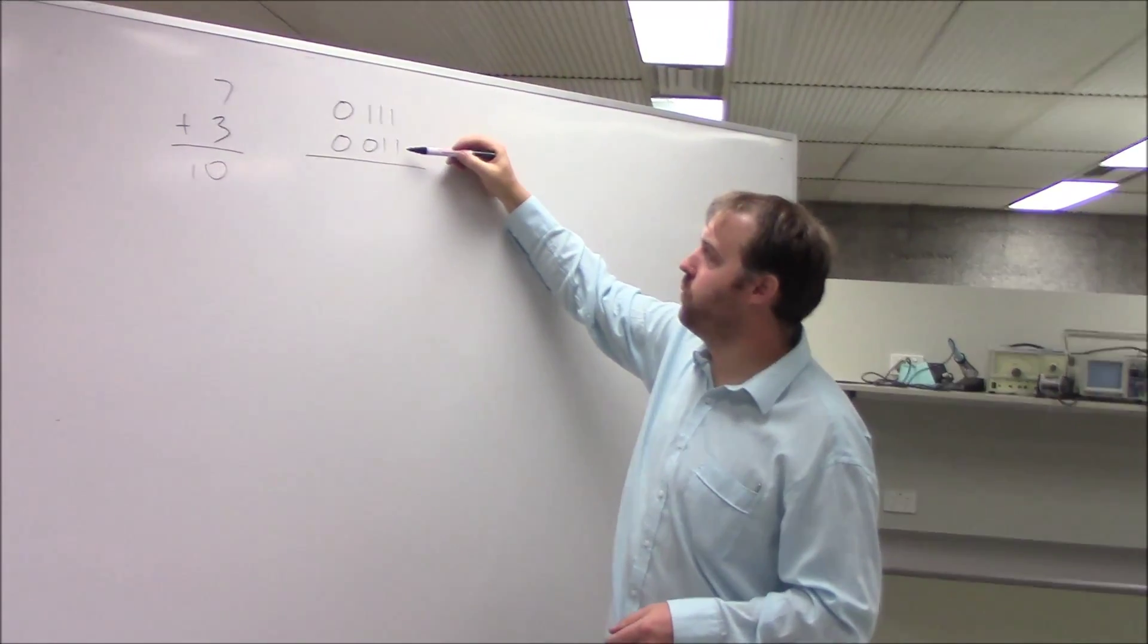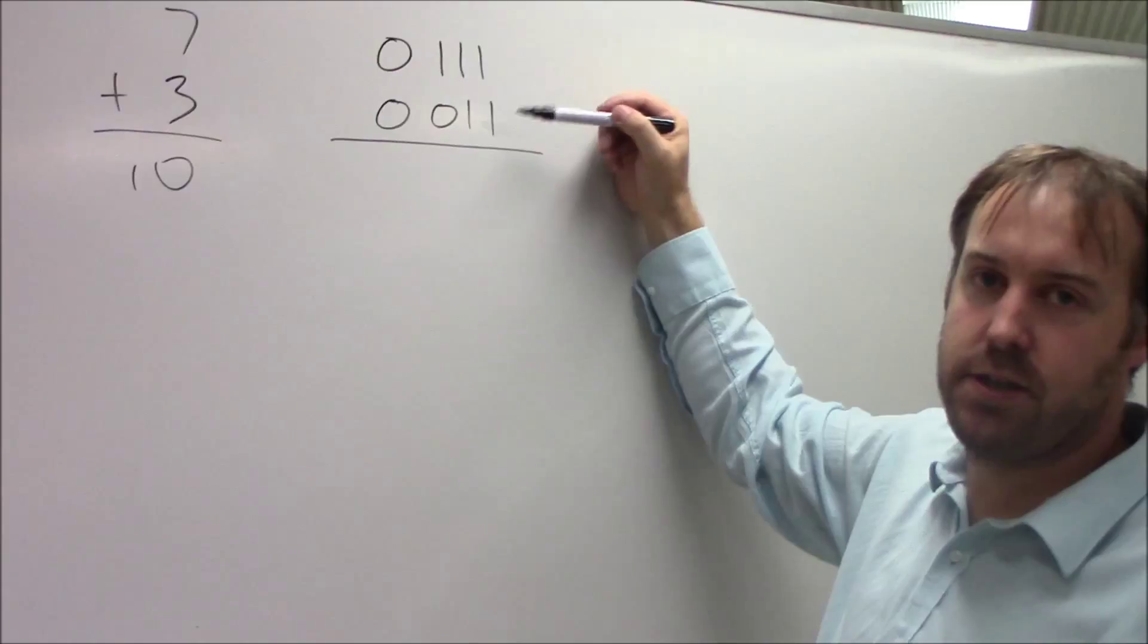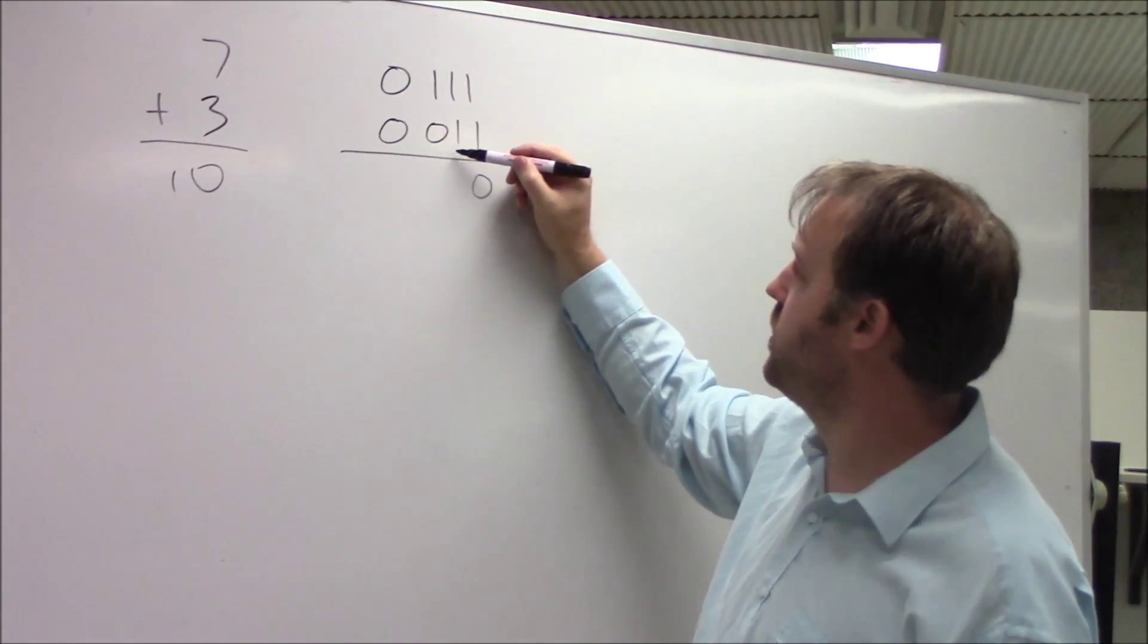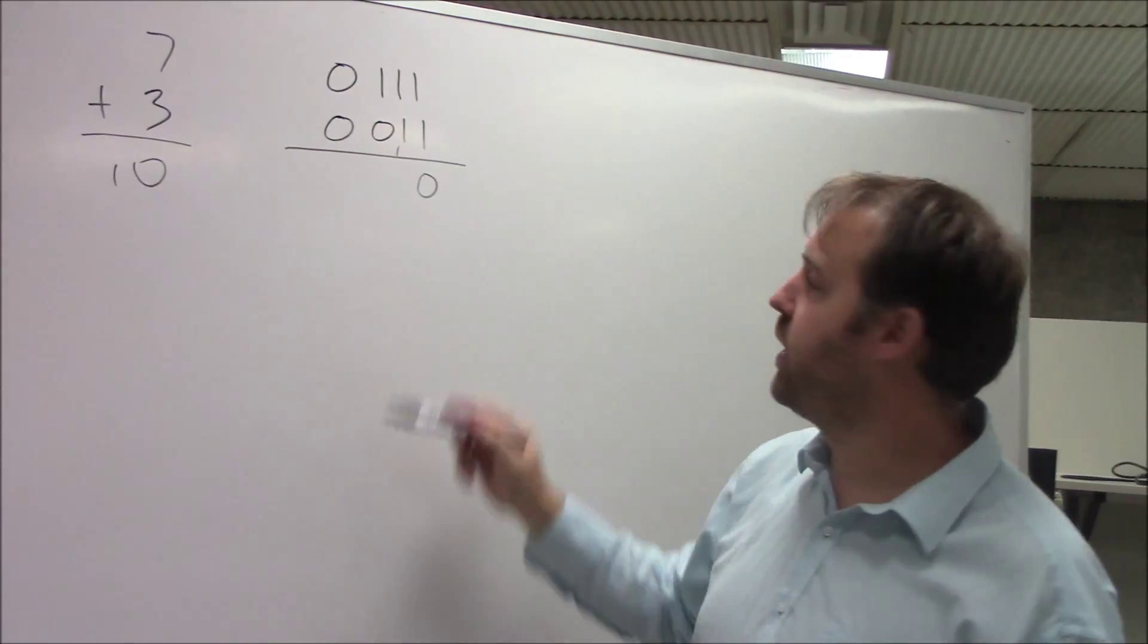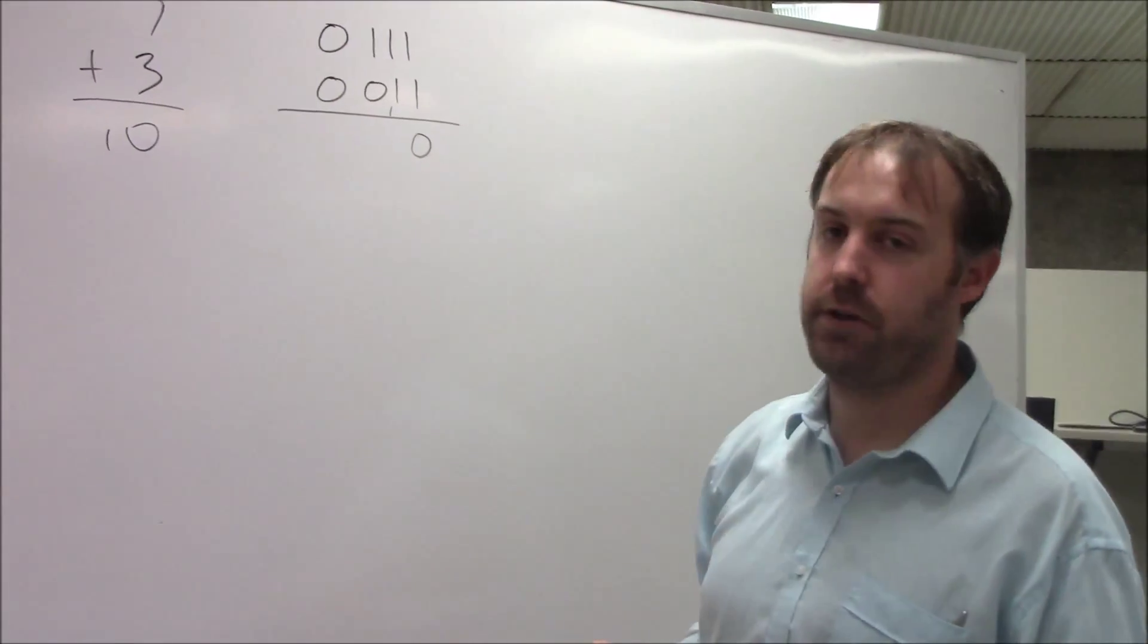Now if I add 1 to 1, I get 2, but I've run out of digits here, so I need to go 0 and 2, which is an extra 1 here. So I'm going to carry the 1. So 2 gives me 1, 0 as my binary for 2.